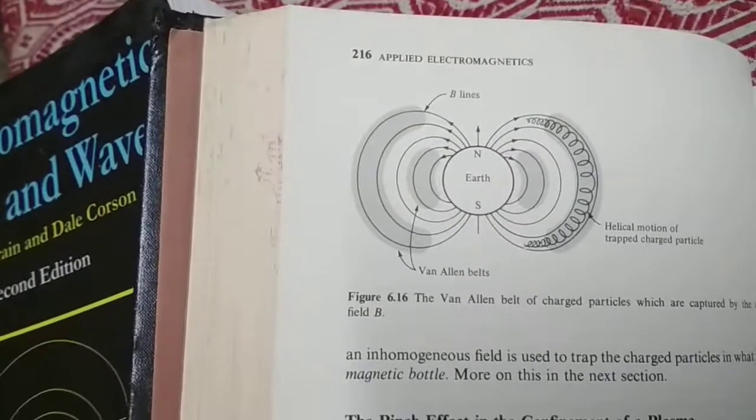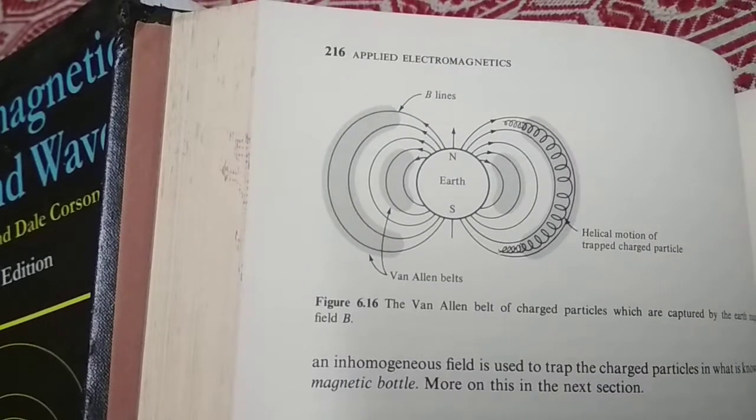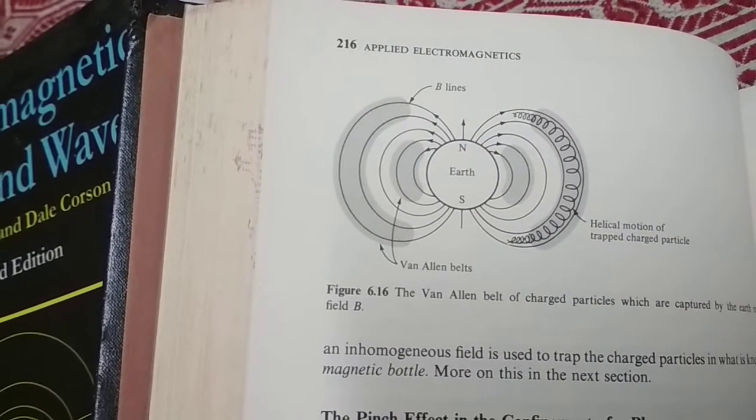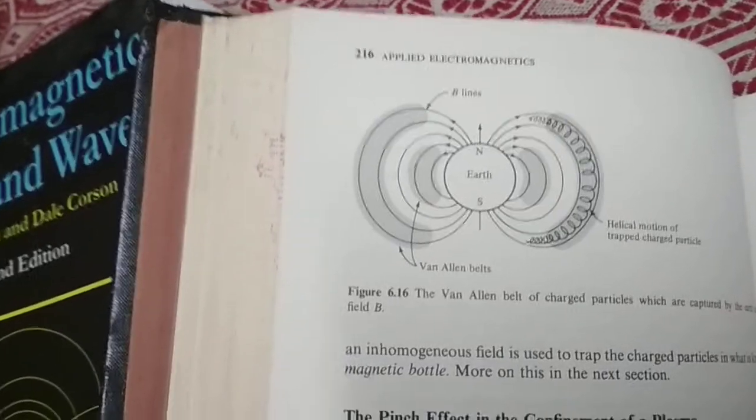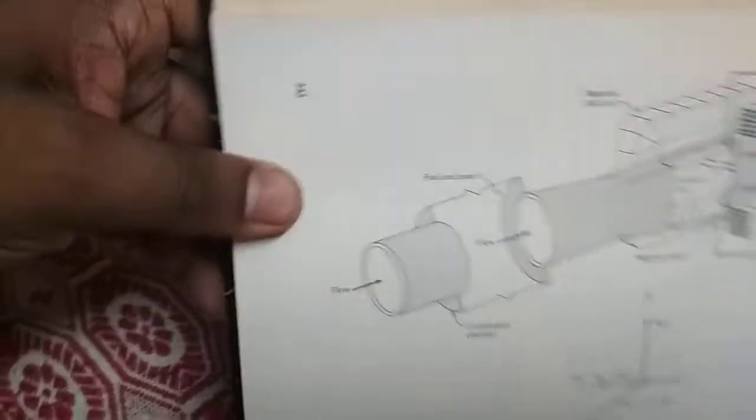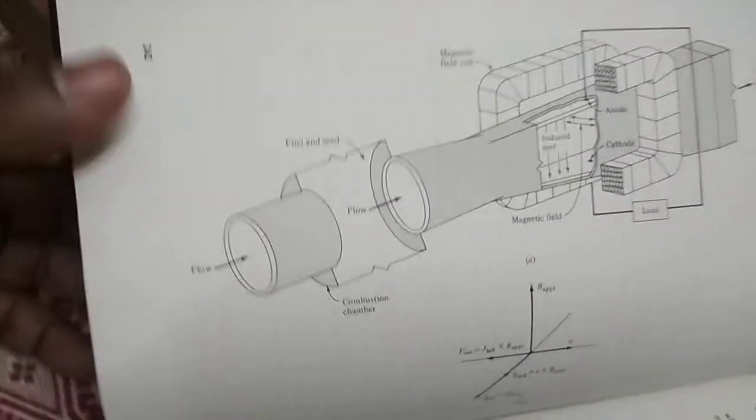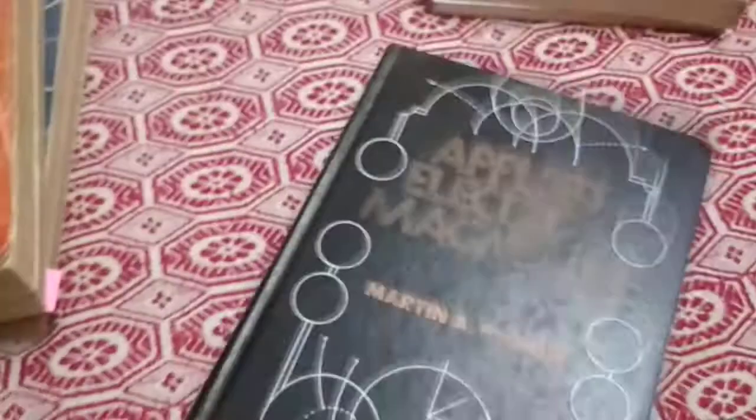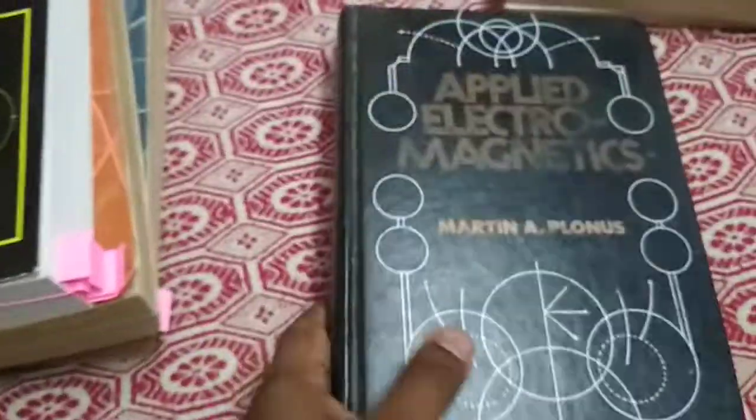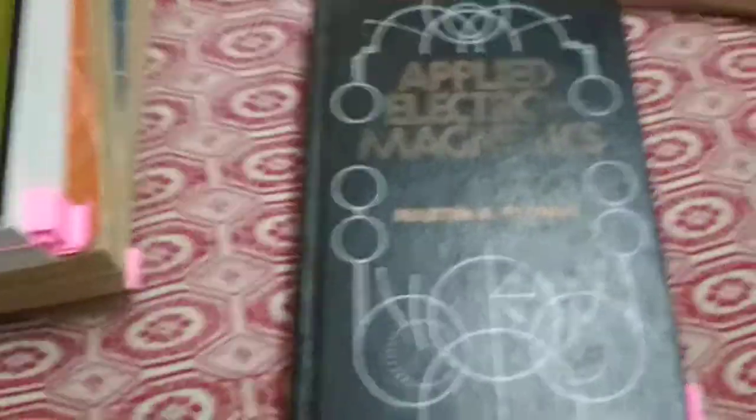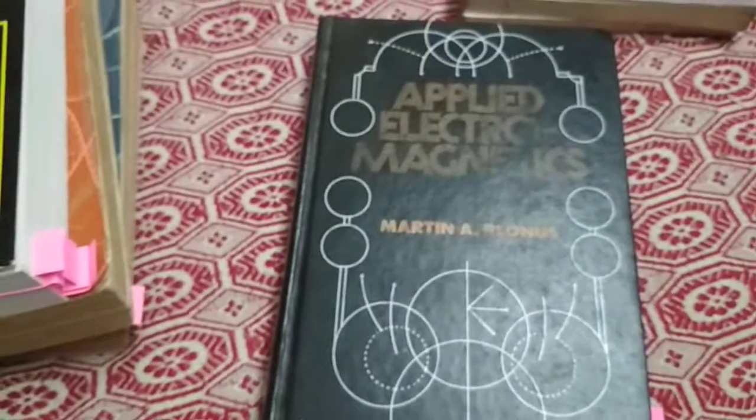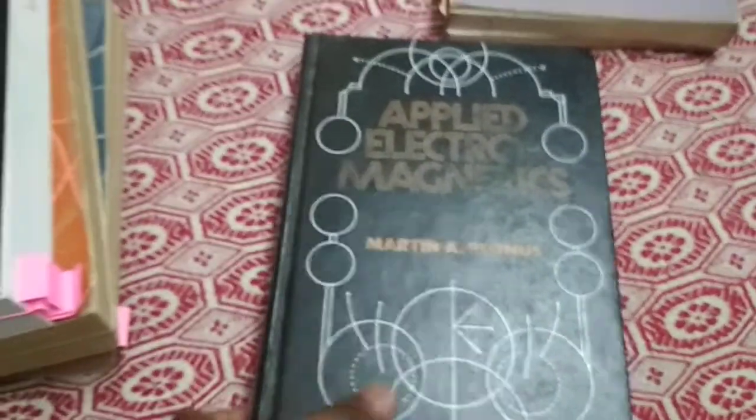Another one is about the Van Allen belts, how the electrons and ions behave in the geomagnetic field and how they travel between the North Pole and South Pole. This one is about magnetohydrodynamic power generation. Many such applications are present in this textbook. It's just up to the point. Again, a book worth considering by any beginner and also advanced students.